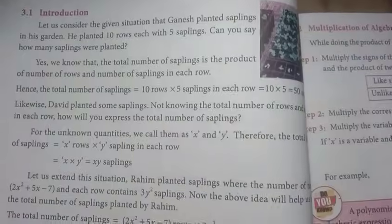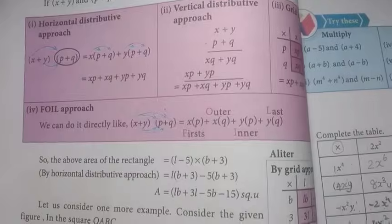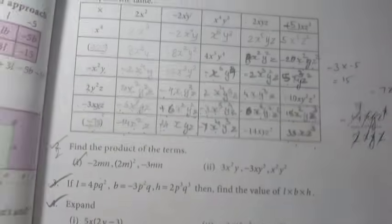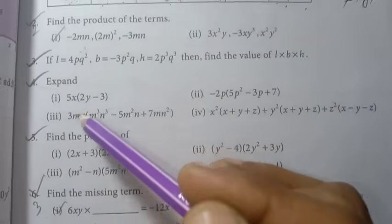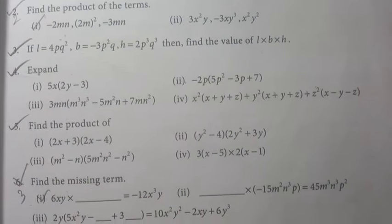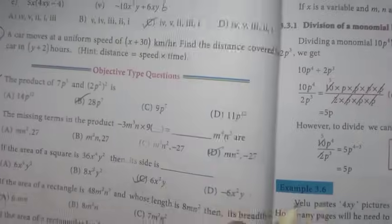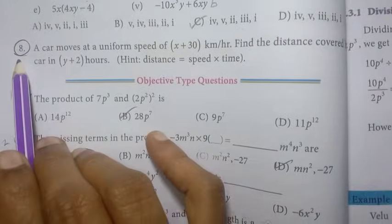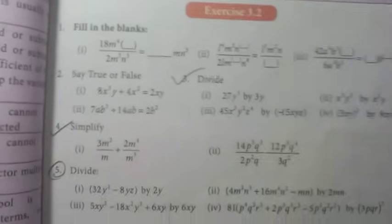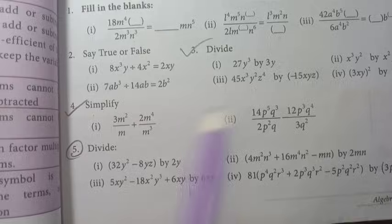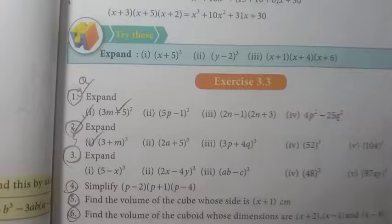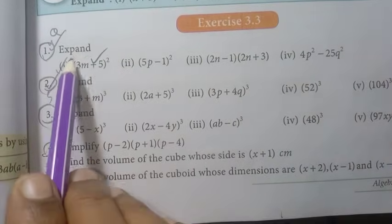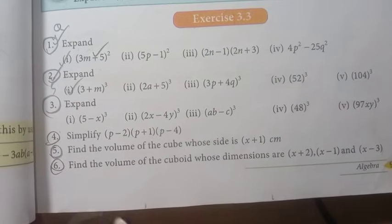Next chapter is algebra. On page 81, questions two, three, four, five, six are important. Then exercise 3.2, fourth one and fifth one on page 85. Next, in the identity section, page 91 has expansion: first, second, third, four, five, six—all algebra questions.